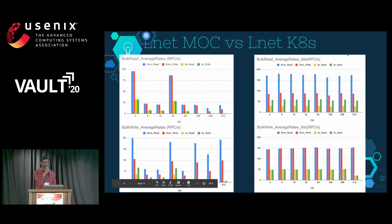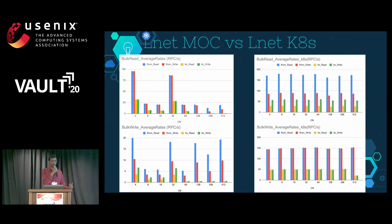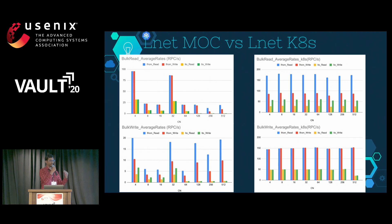We did basic benchmarking to see how performance fared. To stress: this is not at scale — we used just one MGS, MDS, and OSS — so it may not reflect a real-world scenario. But to our surprise, it was performing a little better than an actual bare-metal Lustre filesystem. We think it's because the client and storage servers were located on the same node, resulting in less network chatter, which is why bandwidth and utilization were better. We need to work more on this to finalize results.